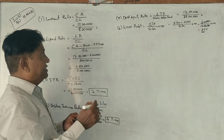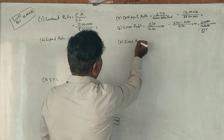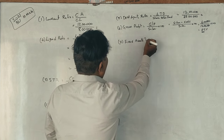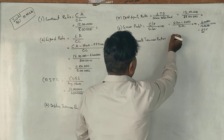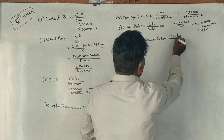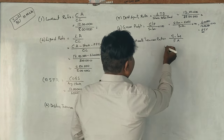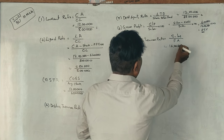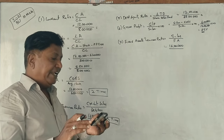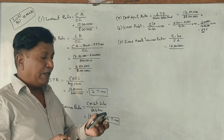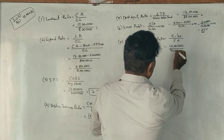Next, fixed assets turnover ratio. The formula is sales divided by fixed assets. Sales is 16 lakhs. Fixed assets include land and building of 18 lakhs and plant and machinery of 16 lakhs, totalling 34 lakhs. So fixed assets turnover ratio is 16 lakhs divided by 34 lakhs, which equals 0.47 is to 1.